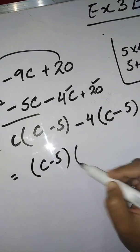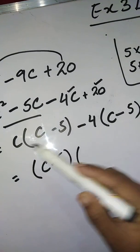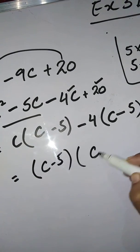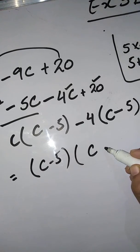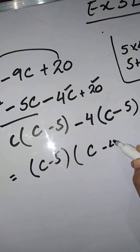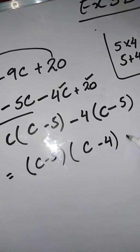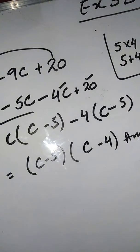Take (c - 5) as common. What is left is c from the first group and -4 from the second. So the answer is (c - 5)(c - 4).